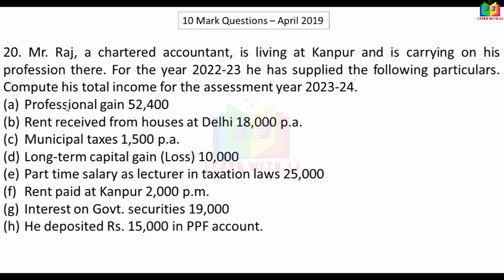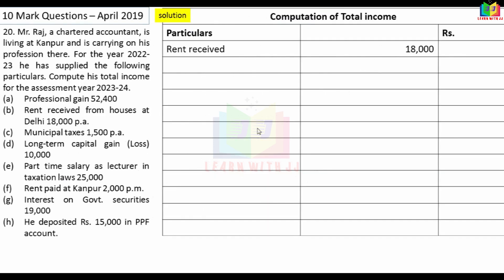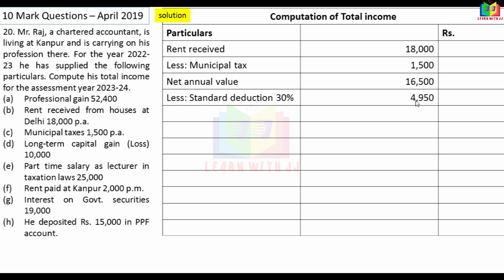First, house property income. Rent: Rs.18,000 per annum. Municipal tax: Rs.1,500. Net annual value: Rs.16,500. Deduction at 30%: Rs.4,950. Balance income from house property: Rs.11,550.